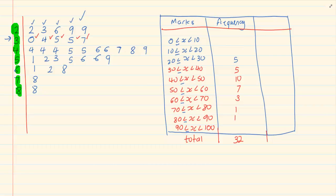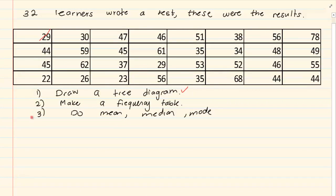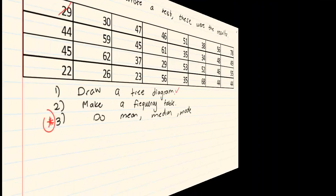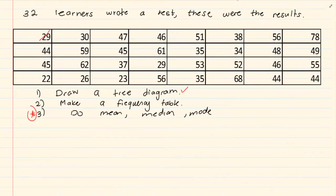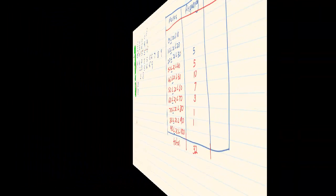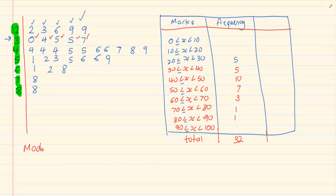You drew the tree diagram, now you made a frequency table. This is what you are trying to learn: how do we do the mean, median and mode of grouped data? The mode meant most repeated, so the mode is between 40 and 50.